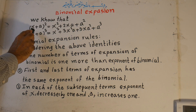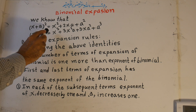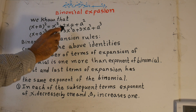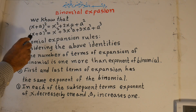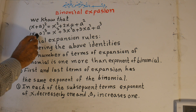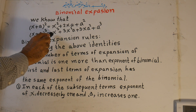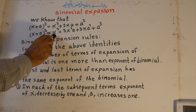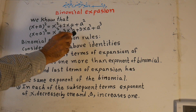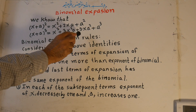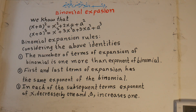To recap: x plus a to the power of 2 is equal to x to the power of 2, plus 2xa, plus a to the power of 2. And x plus a to the power of 3 is equal to x to the power of 3, plus 3x squared times a, plus 3x times a to the power of 2, plus a to the power of 3.